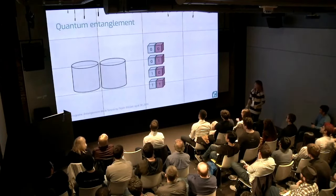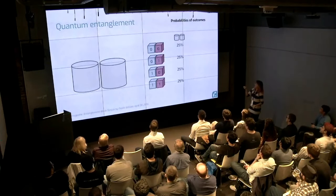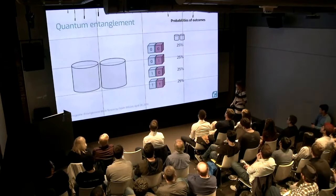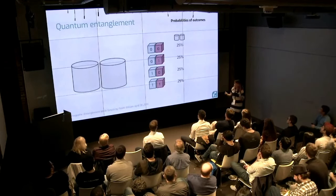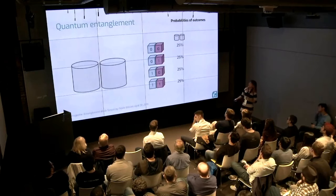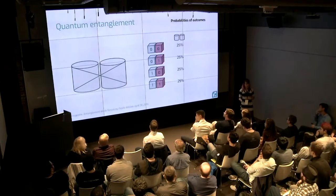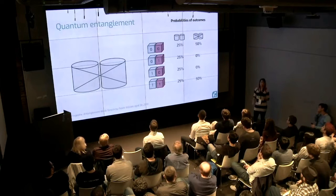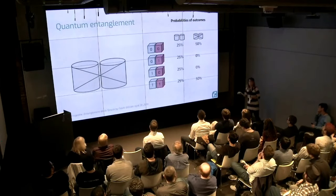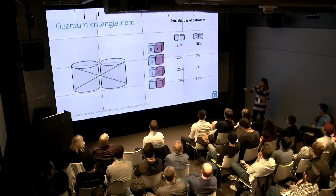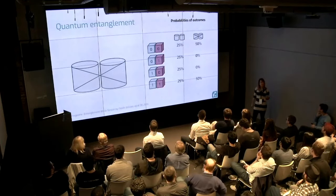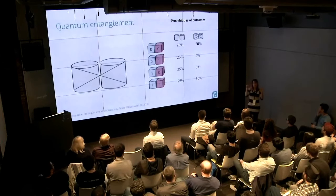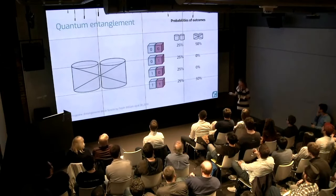If I do this 1,000 times, then 25% of the time I get zero-zero, 25% zero-one, and so on. But now I'm going to entangle my quantum boxes. When I do entanglement, I can change the probability distribution of what comes out — which is pretty spooky. That means if I pick a zero out of this box, then I know for certain I'm going to pick a zero from the other box. So the outcome of the left box influences what comes out of the right box. This is what quantum entanglement is.